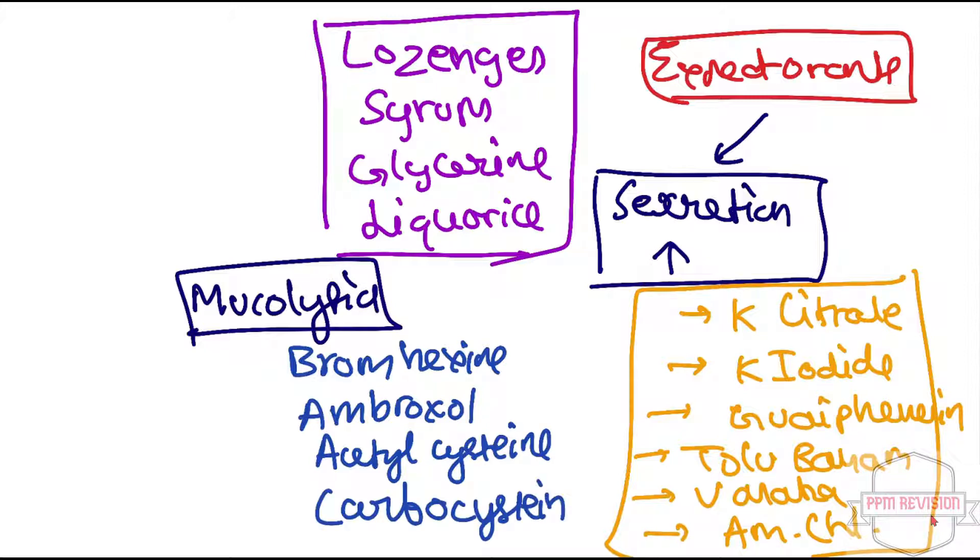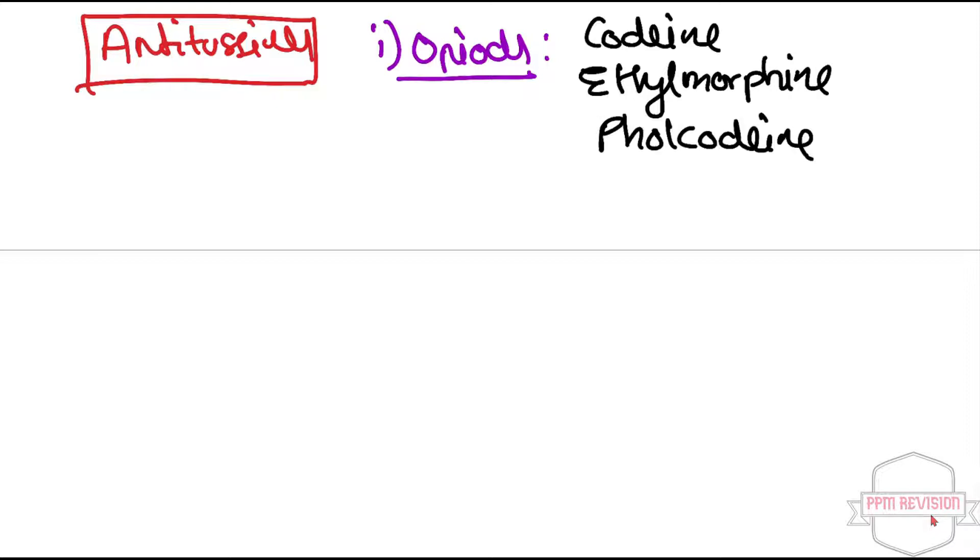So now moving ahead we will be looking at the other category that was antitussives, and antitussives are further divided into opioids. Under this opioids there is codeine, ethylmorphine as well as pholcodine.